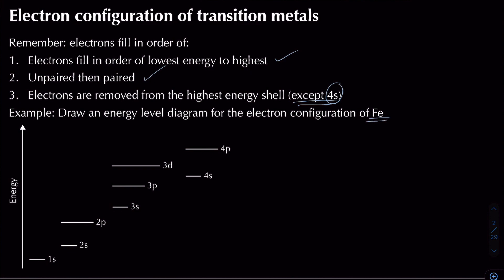Looking at iron as an example: iron has 26 electrons. Starting from the bottom of the energy level diagram and working up, we fill 1s, 2s, 2p, 3s, 3p, then jump to 4s (lower energy than 3d), and finally 3d — giving us electrons 1 through 26 distributed across all those subshells.